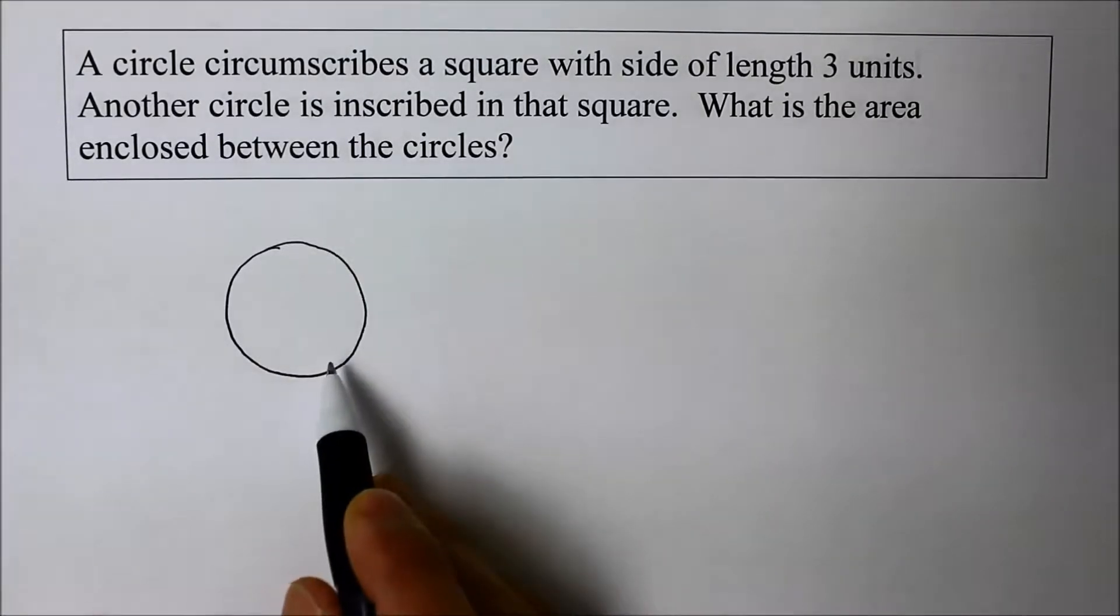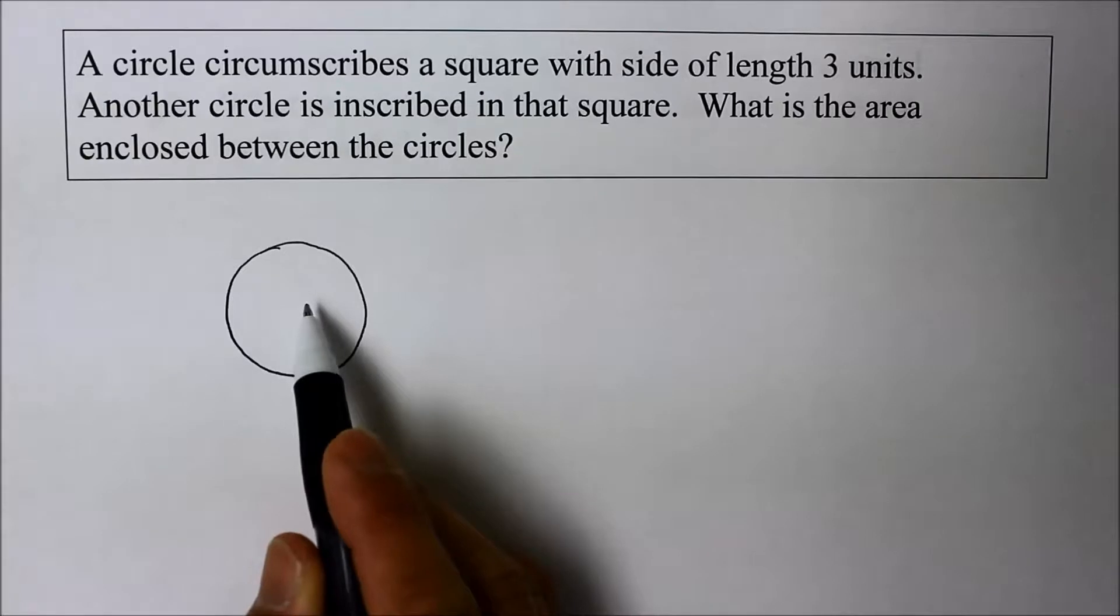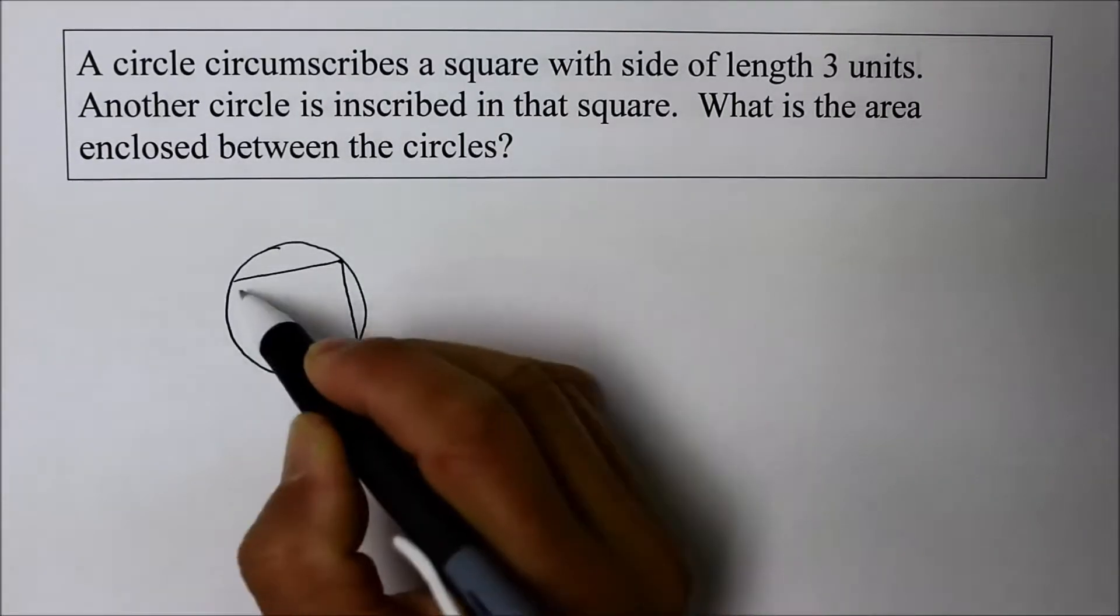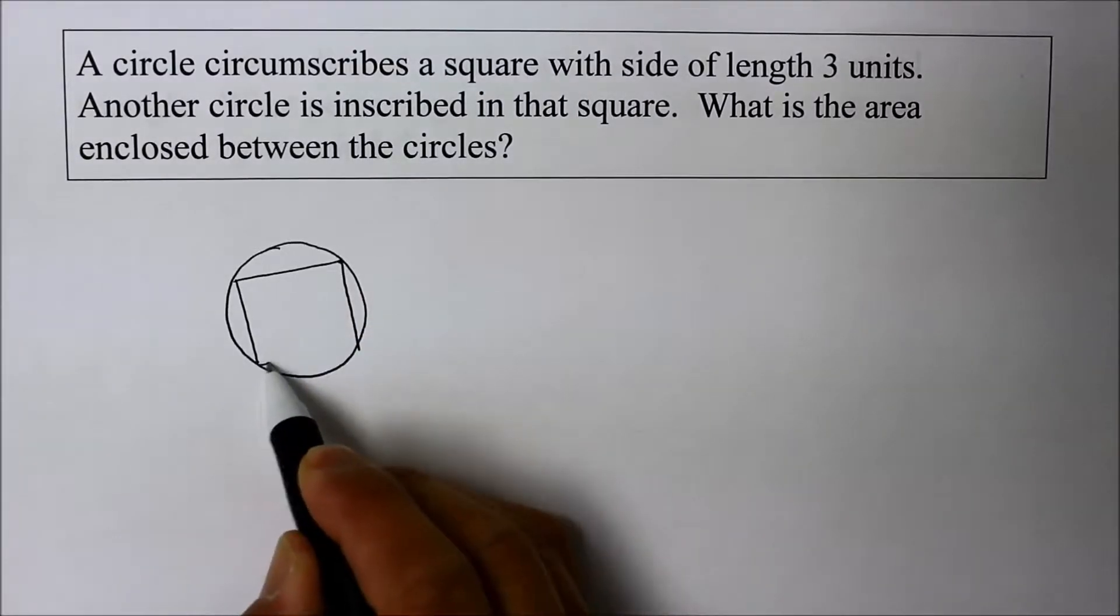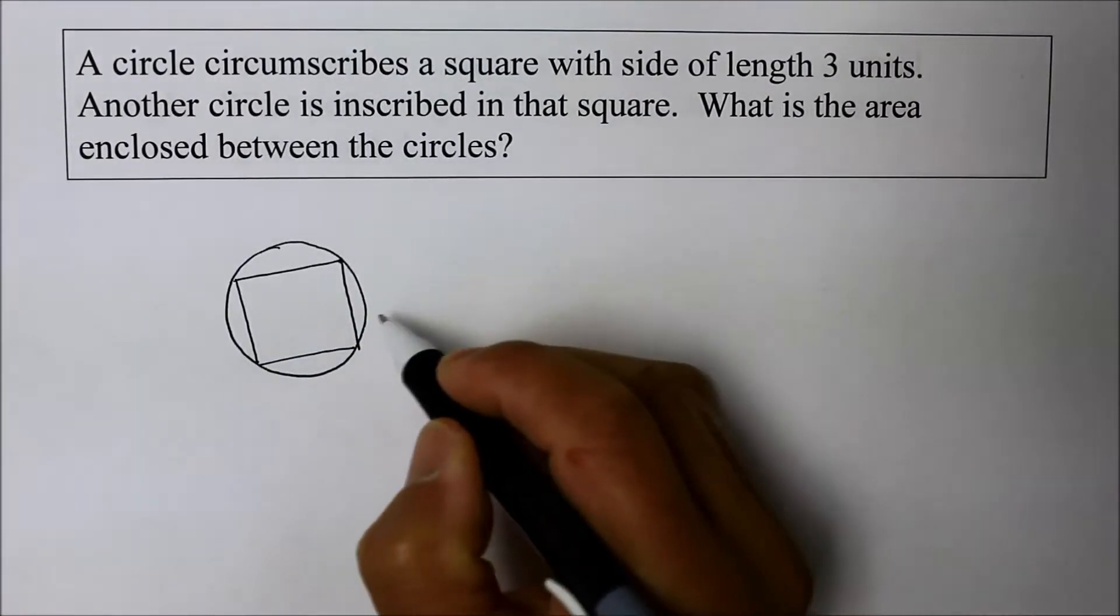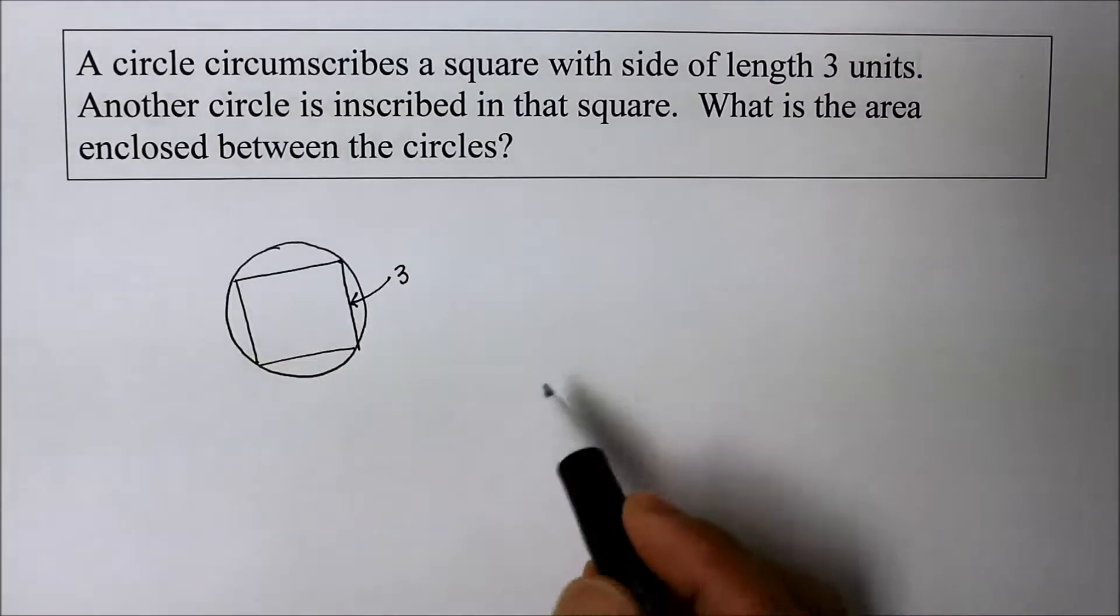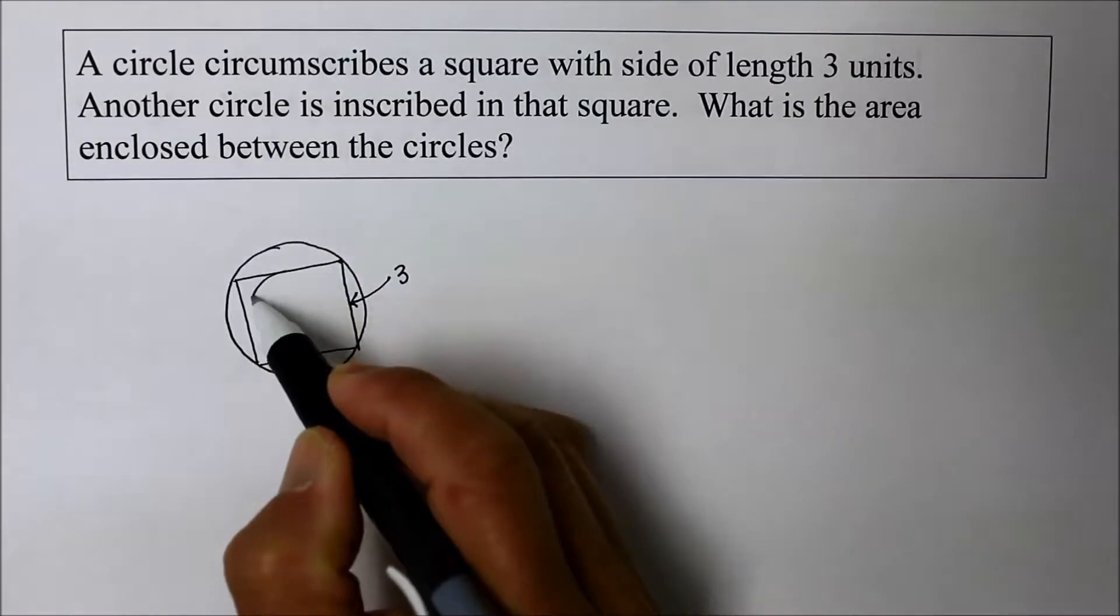Okay, not too bad. And then inside the circle, we have a square. Let's just assume this is a square. It's not perfect. And the unit measurement is 3 for each side. And then there's another circle inside that. So here comes another circle inside that.